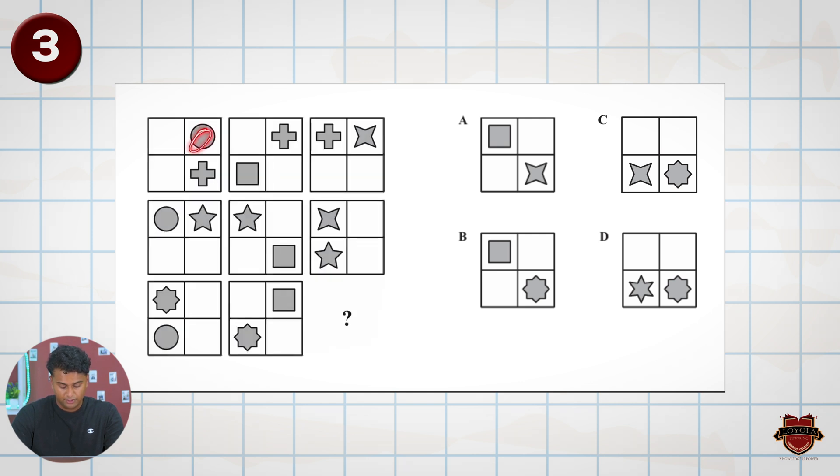So we have circles some of the times, we have crosses some of the times, we have the stars, the squares, the cross already, and then we have this octagon shape, and then we also have this ninja star shape.